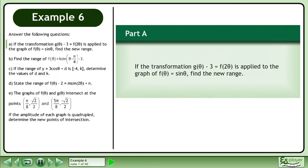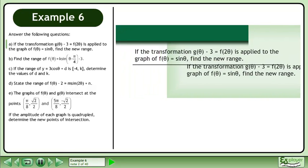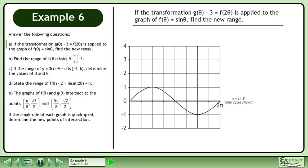If the transformation g of theta minus 3 equals f of 2 theta is applied to the graph of f of theta equals sine theta, find the new range. We'll begin by drawing the graph of y equals sine theta to use as a reference. We write the transformation as g of theta equals f of 2 theta plus 3.